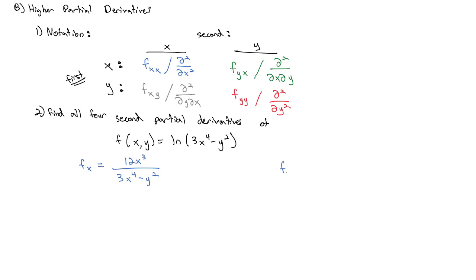For the first derivative with respect to y, we take the derivative of the natural log, which is 1 over (3x⁴ − y²), and then multiply by the derivative of the argument with respect to y. Since x is a constant it goes to zero, so we just get negative 2y. Now that we've got those first derivatives, let's take a look at our second derivatives.